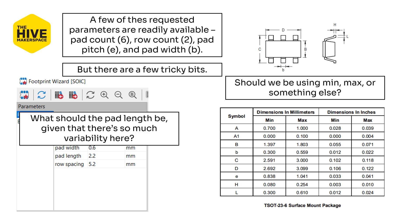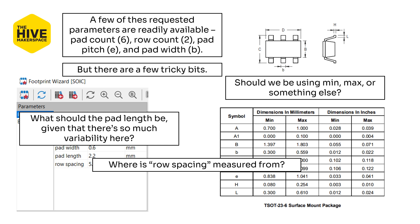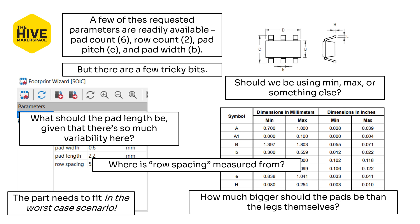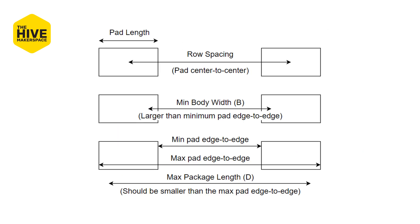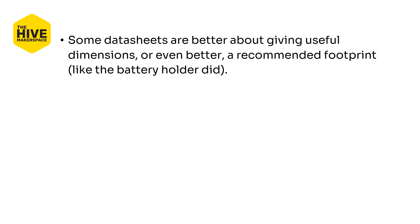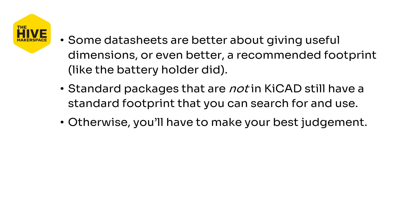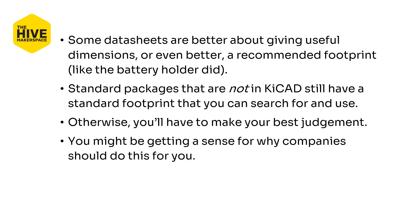There are a few tricky bits: should we be using min, max, or something else? What should the pad length be given all the variability? What is row spacing measured from — the middle of the pad, the pad edge? How much bigger should the pads be than the legs themselves? The part needs to fit in the worst-case scenario. The row spacing is measured center to center in this wizard, but the pad interior edge to edge is smaller than the minimum body width. Some datasheets are better about giving useful dimensions or even a recommended footprint. Standard packages not in KiCad still have a standard footprint you can search for and use.